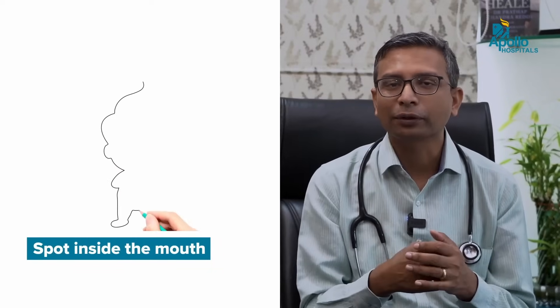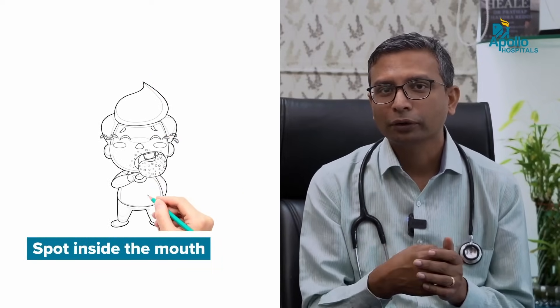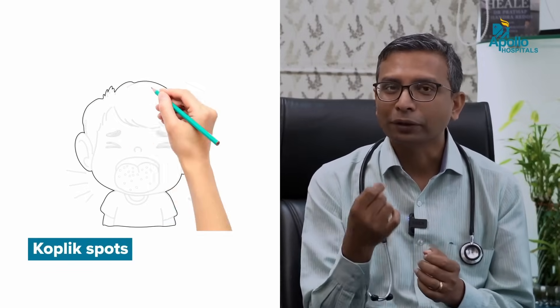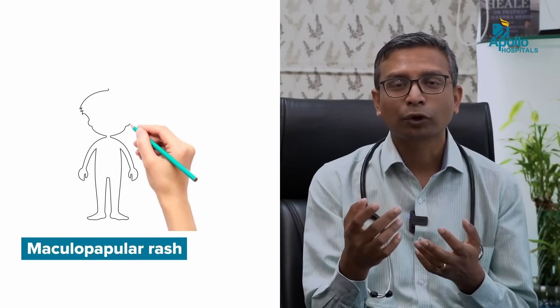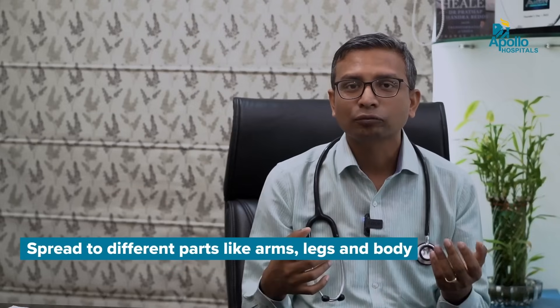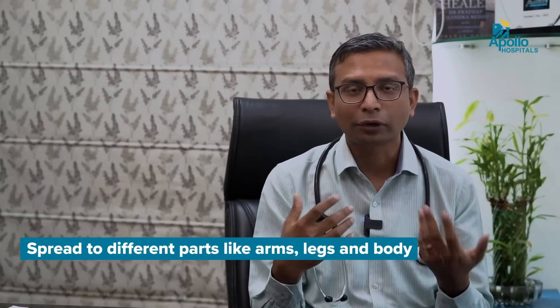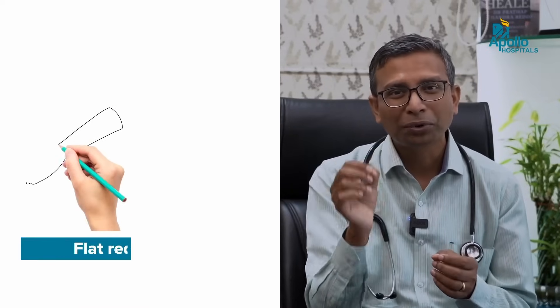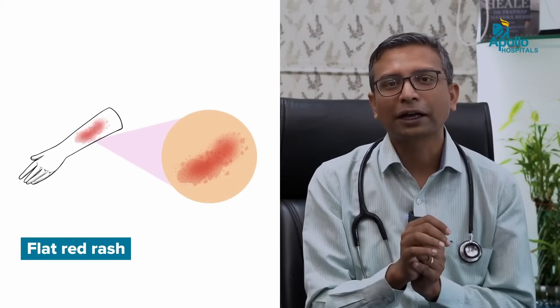The most common early sign — even before other symptoms appear — is a spot that forms inside the mouth, called Koplik spots. Most people might miss it because it's inside the mouth. But if you observe inside the mouth you can find the spot first, and then later on a rash develops. It's a maculopapular rash — a reddish, spotty-type rash all over the body. It typically starts in the trunk and spreads to the arms, legs, and face. It doesn't cause pimples or pus, just some bumps or a flat red rash.